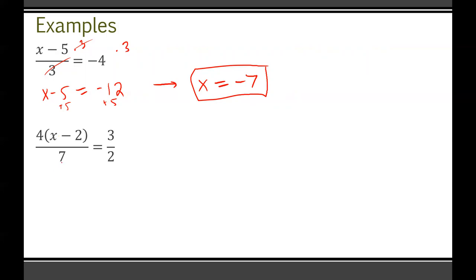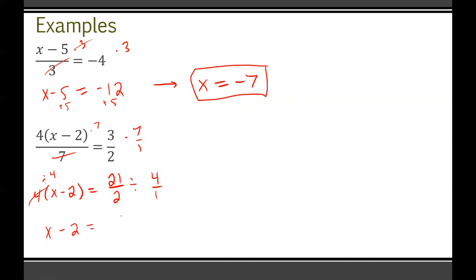This next one is absolutely beefy — pick away at it one piece at a time. It's 4(x minus 2) divided by 7 = 3/2. Start by multiplying both sides by 7, giving 4(x minus 2) = 3/2 times 7, which is 21/2. Next, divide both sides by 4. Since 21/2 divided by 4 is a fraction divided by a fraction, keep-change-flip: keep 21/2, change to times, flip to 1/4, giving x minus 2 = 21/8.